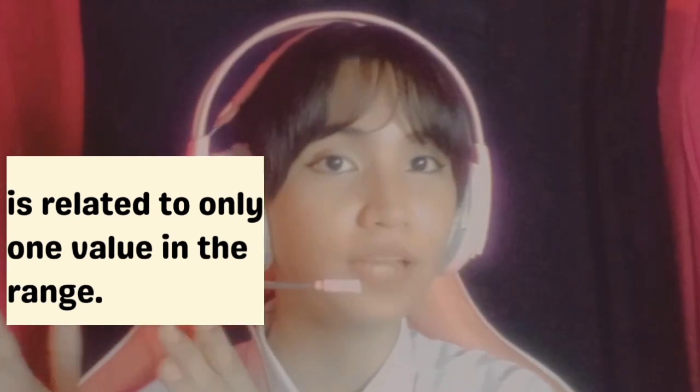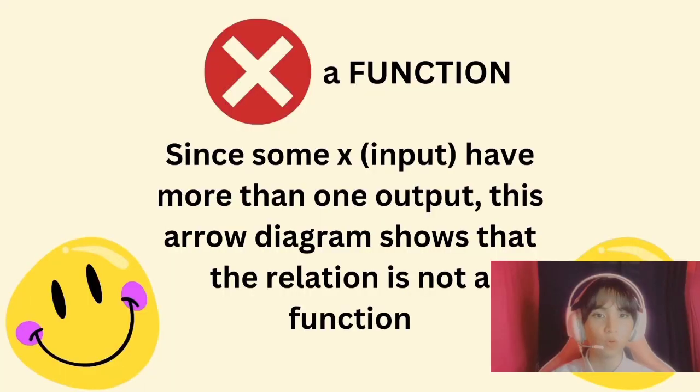So, what did you notice about the arrow diagram? Remember what I said earlier? A relation is only a function only if the domain is related to only one value in the range. So, in our arrow diagram, the domain is related to two or more values in the codomain. So, that is not a function.